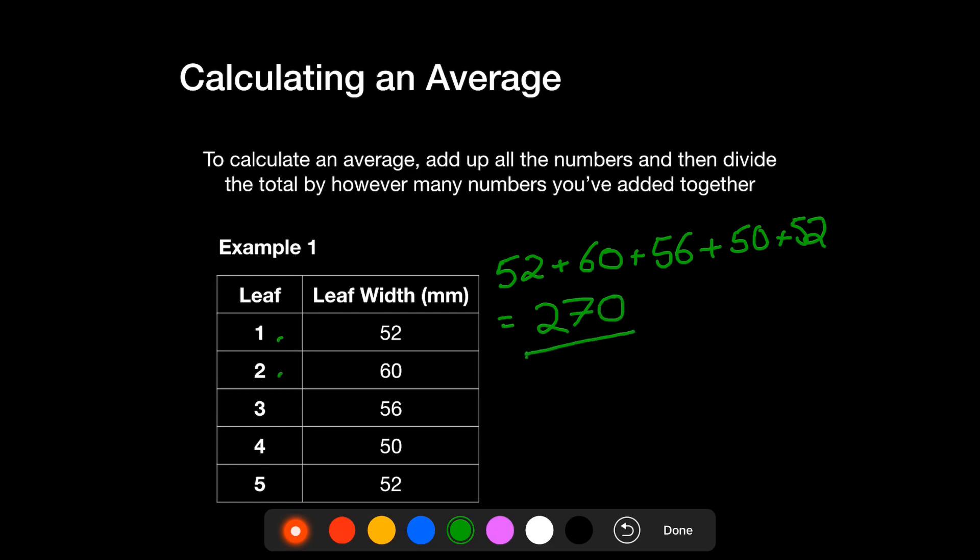So this total of 270, we want to divide it. And you can see we have one, two, three, four, five leaves. So you divide that by five to get your answer, which is an average of 54. So the average leaf width is 54.